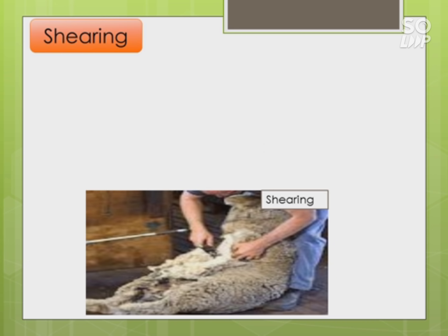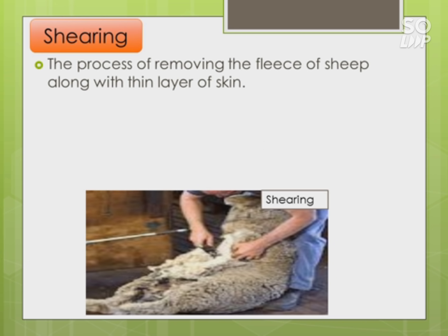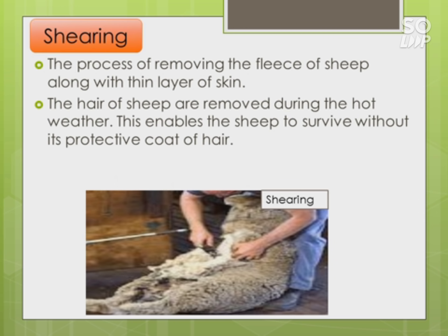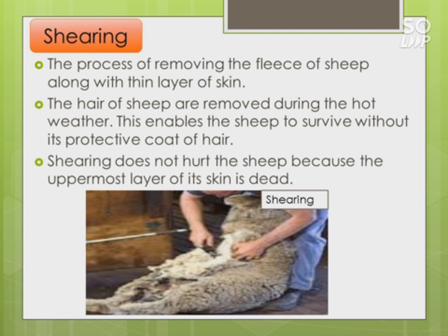The next step is shearing - the process of removing the fleece of a sheep along with a thin layer of skin. The hair of sheep are removed during hot weather, i.e., during summer. This enables the sheep to survive without its protective coat of hair. Shearing does not hurt the sheep because the uppermost layer of its skin is dead.